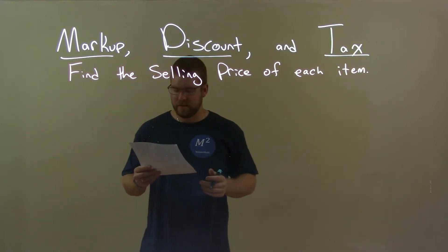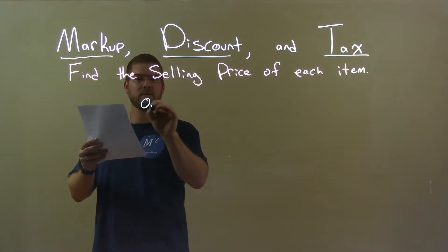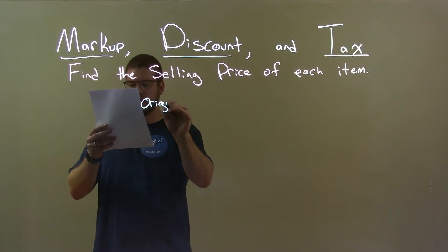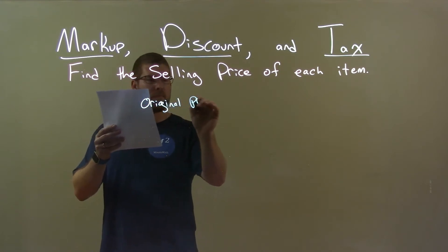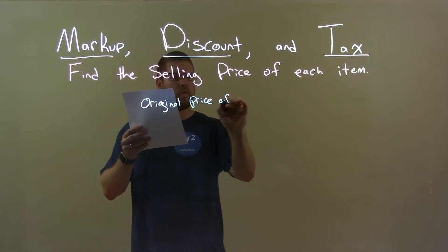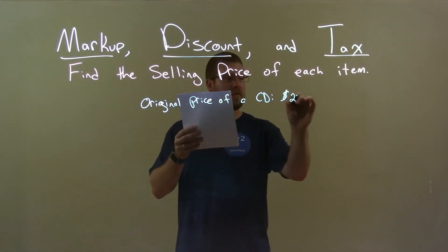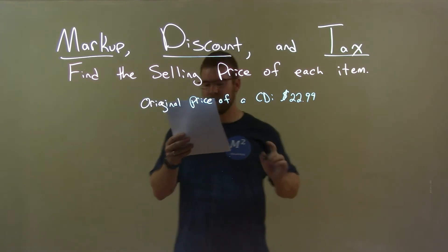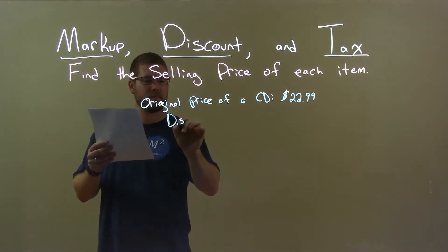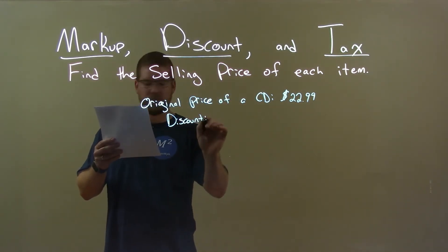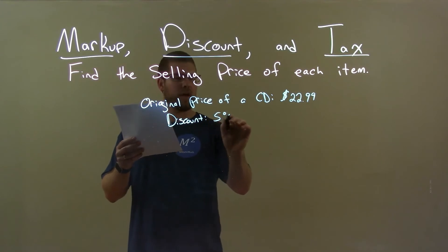So, if I was given this item, the original price of a CD, and that original price is $22.99, his discount is 5%, alright?